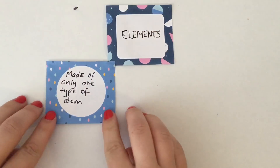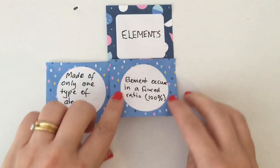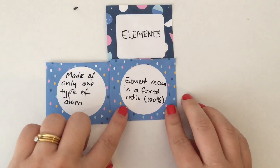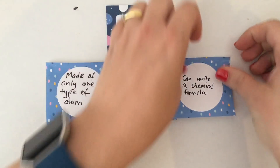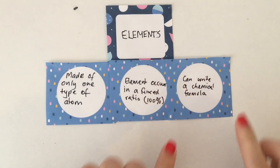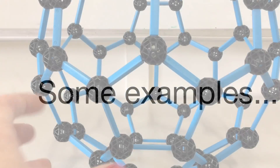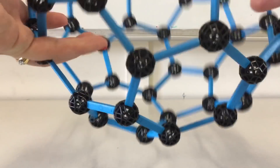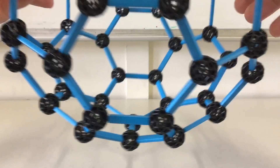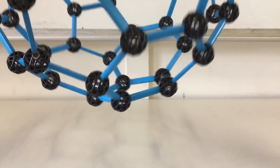Elements are pure substances which are made up of only one type of atom. Because there is only one type, that element occurs in a fixed ratio — it's a hundred percent — which means that we can write a chemical formula for elements.